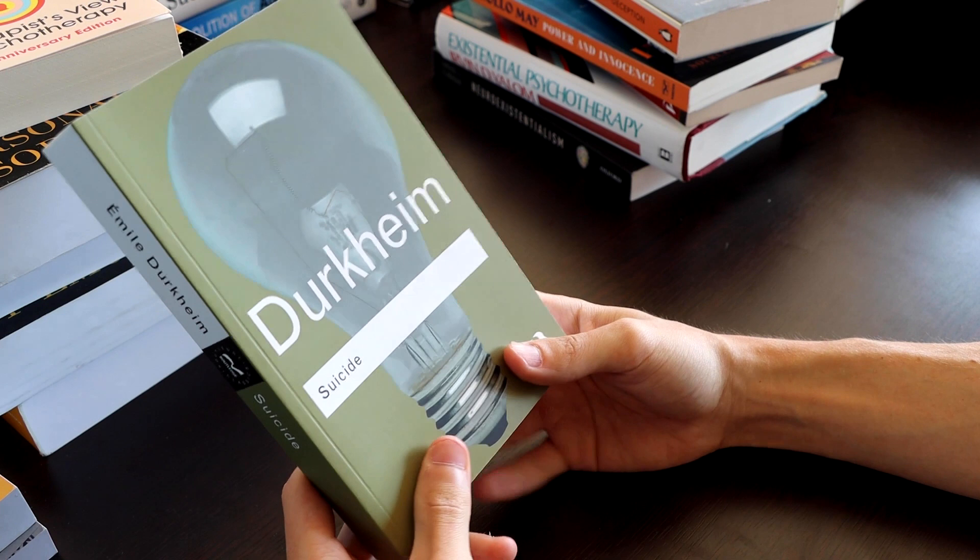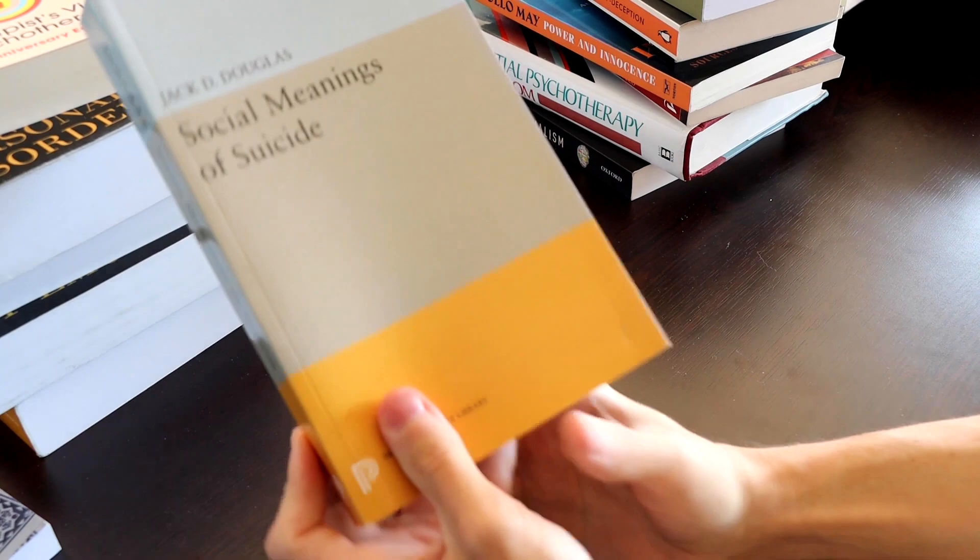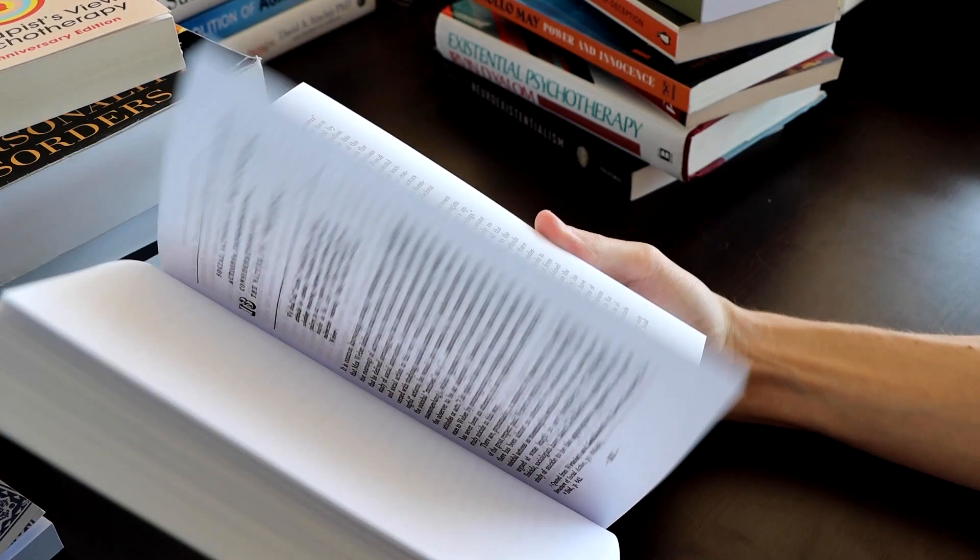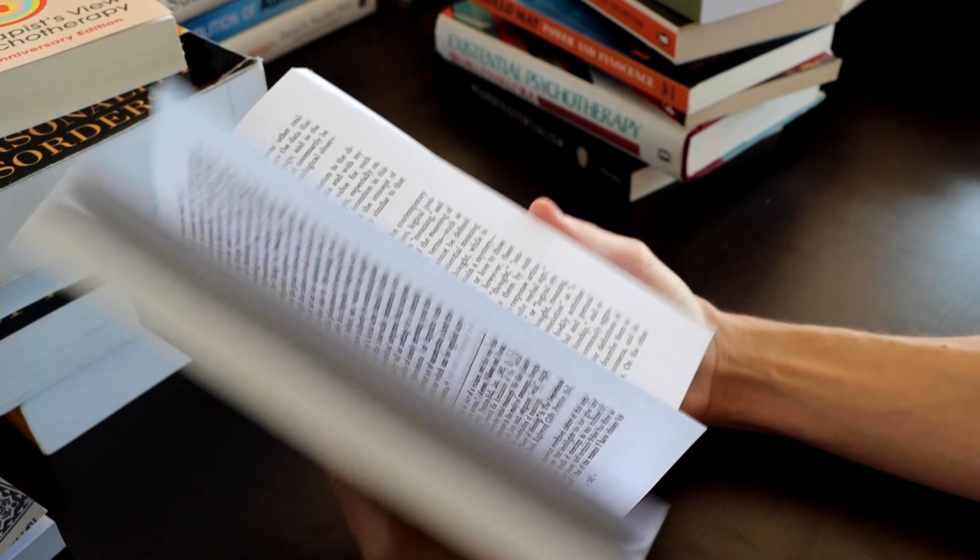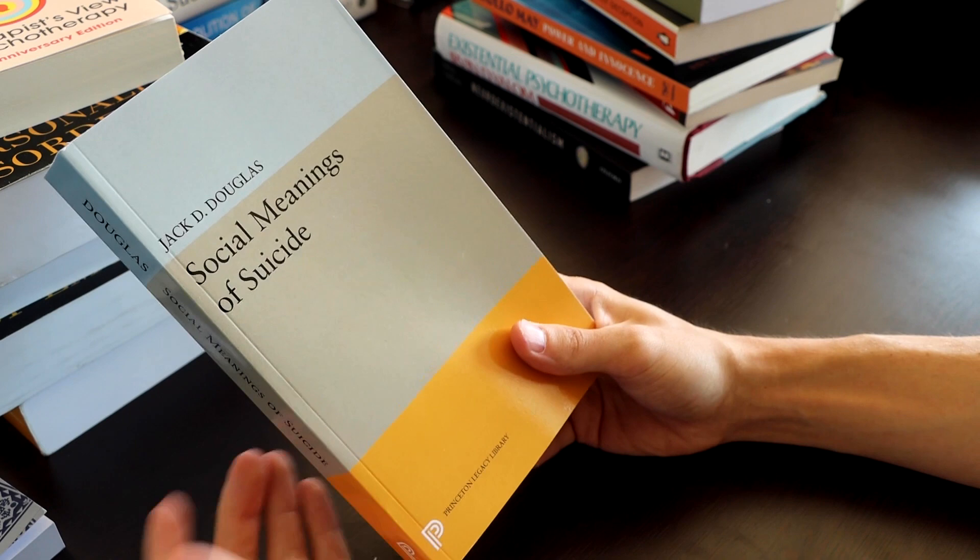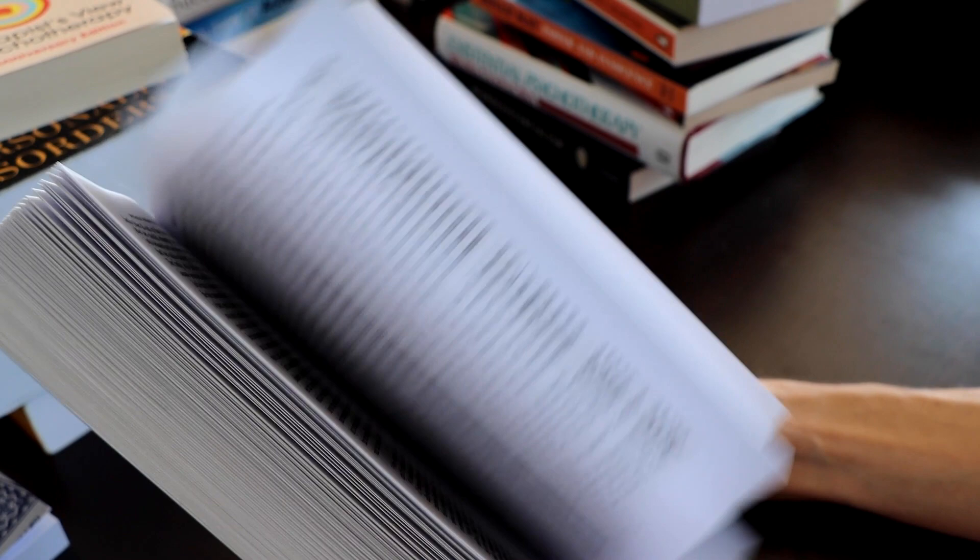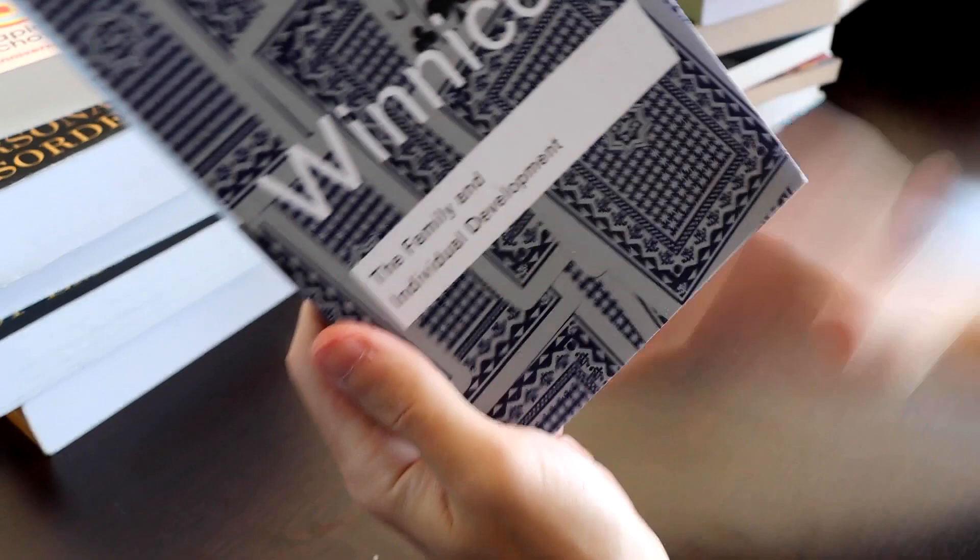I also got a commentary on Durkheim, but I believe this guy contributes his own original ideas as well. Like I believe he comments on Durkheim but then has some things to say about suicide as well. If I'm going to guess what this book is about, what suicide communicates about the nature of your society, your communities. If people in your community are committing suicide, what does that mean? And stuff like that. That would be my guess.